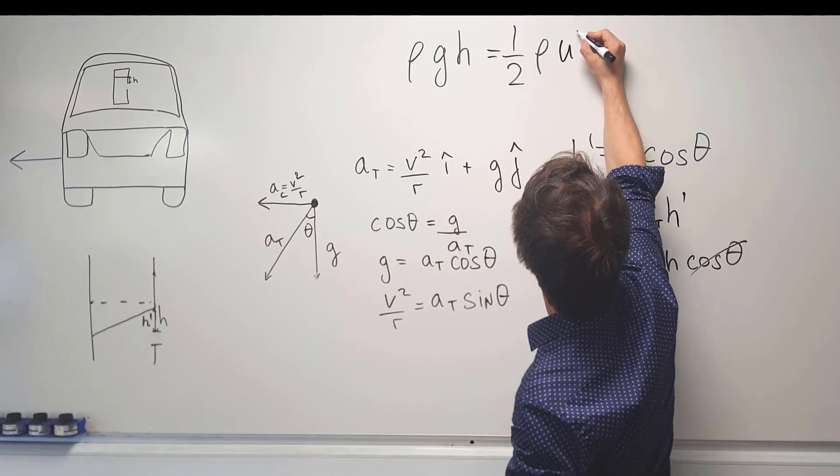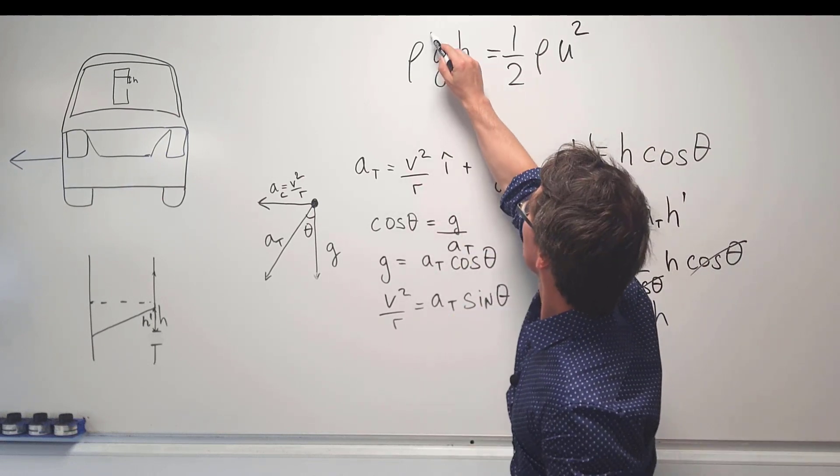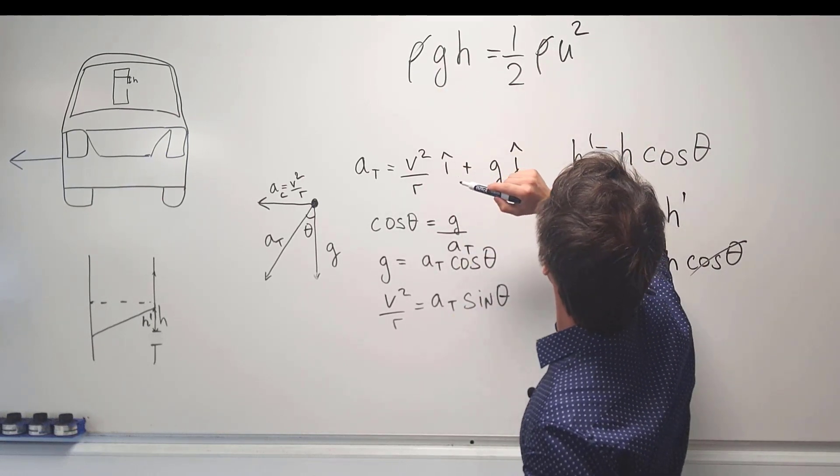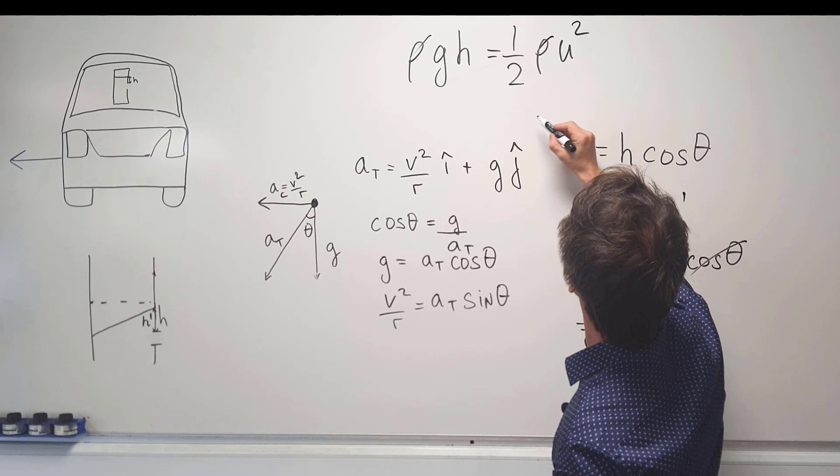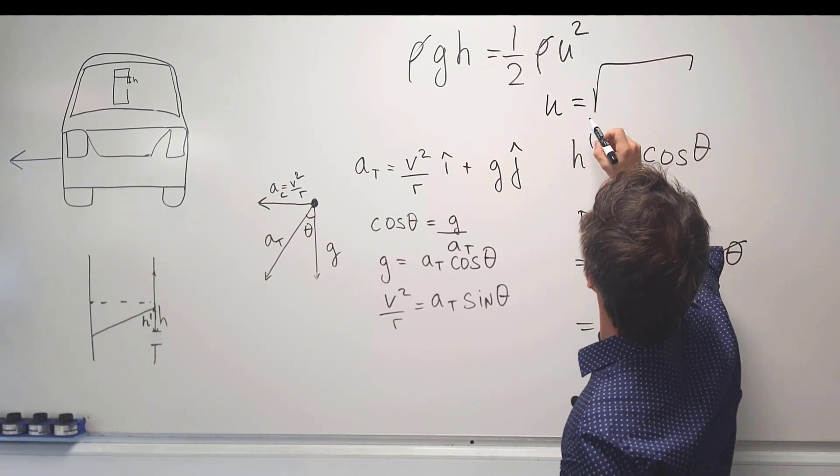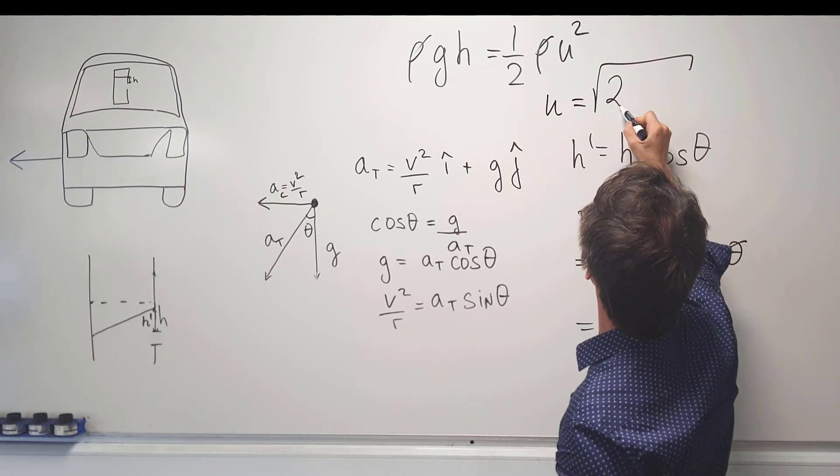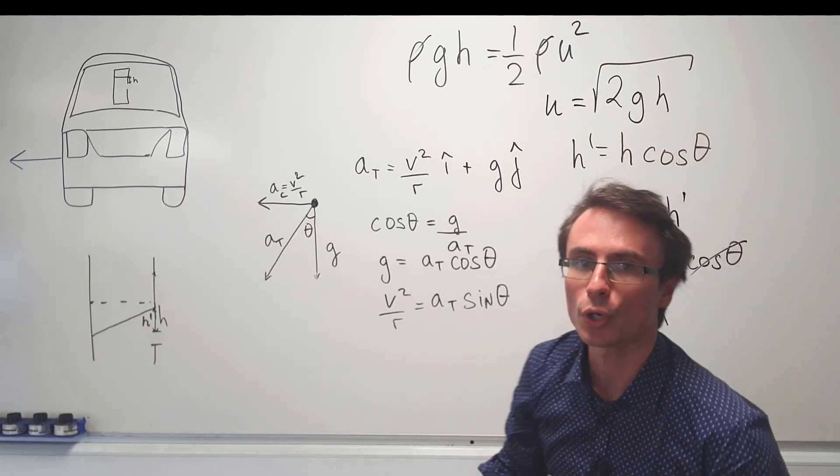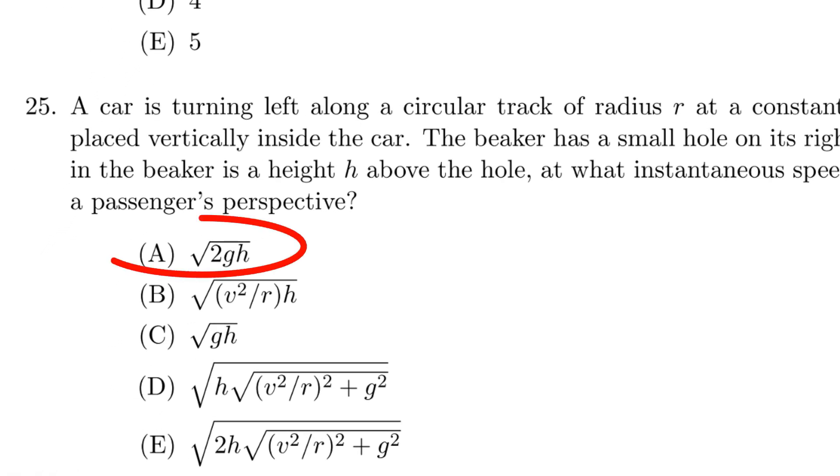So let's use U squared. We can do some cancelling out and what we're left with is that U will be equal to the square root of 2 G H, meaning that the correct answer is A.